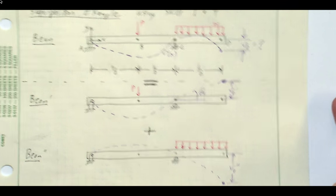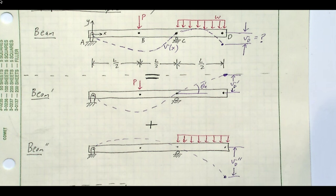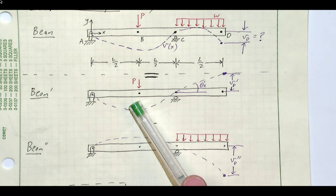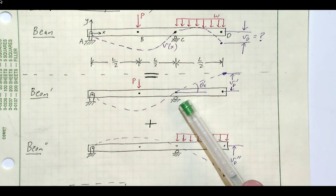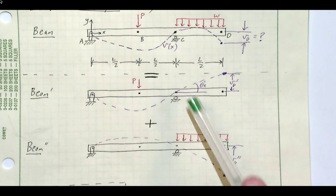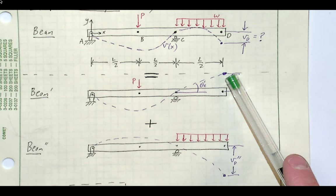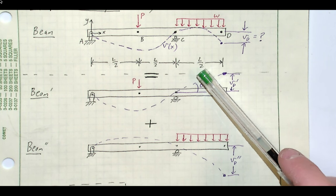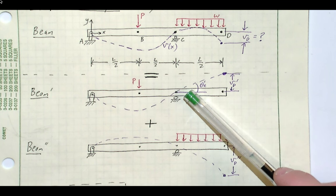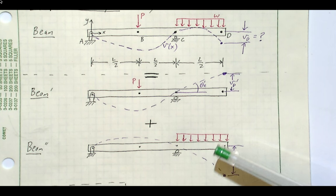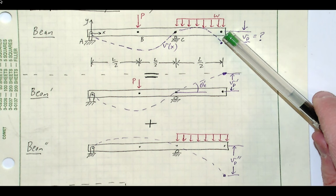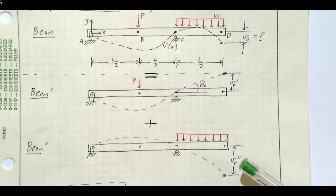Superposition tells us to think about this as two separate beams, each with loading individually. Beam prime is a simply supported beam with a mid-span load P, and the overhang has no loading, so whatever slope we get at C for beam prime will be the slope throughout the overhang portion C to D. We use the beam table to get that slope, extend it over the L/2 length to get vD prime, then add the deflection at D for beam double prime, which carries only the uniformly distributed loading.